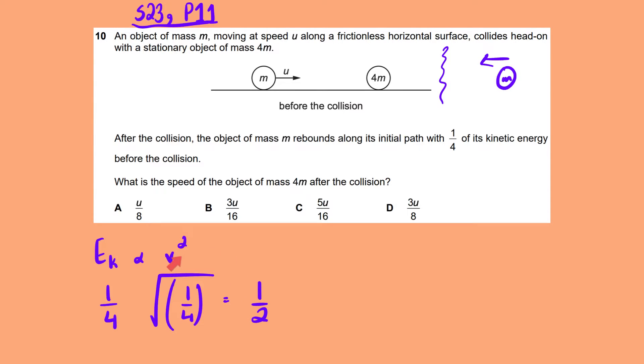This velocity has become half. You can also use this in reverse to see if it works. The square of half is indeed one-fourth. So the first thing is that this velocity has become half. So after the collision it's u by 2 to the left.